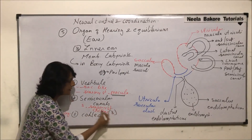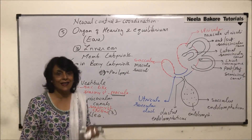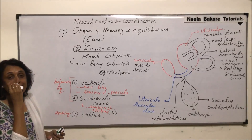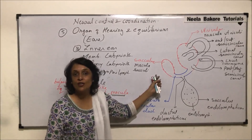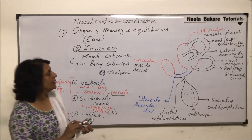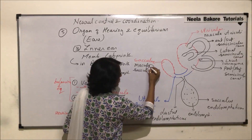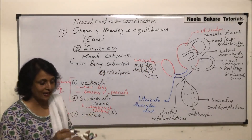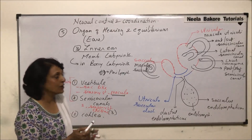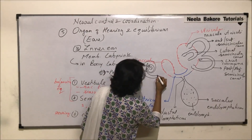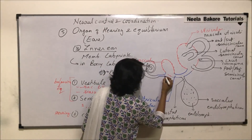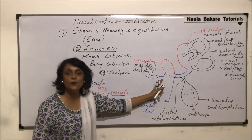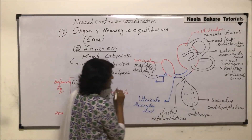There are three cristae, one in each semicircular canal. Now coming to the third part — the cochlea. The cochlea is a coiled tube attached to the sacculus. This cochlea is connected to the sacculus with the help of a small duct known as ductus reuniens.